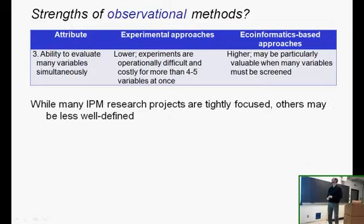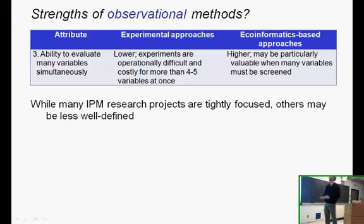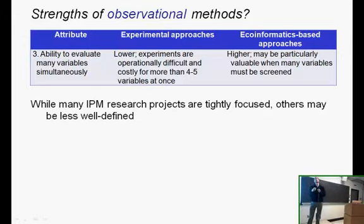How about the third strength of observational approaches? This has to do with how many variables we can cope with at once. With most experiments we're running, we can manipulate just a small handful of variables at a time — once you get to even four or five variables, it's going to be very difficult. But ecoinformatics-based approaches can potentially be useful for screening a vast number of different variables, which can be especially important when IPM research projects are not hypothesis-focused but rather in an exploratory phase. We'll see an example of this in just a couple minutes.